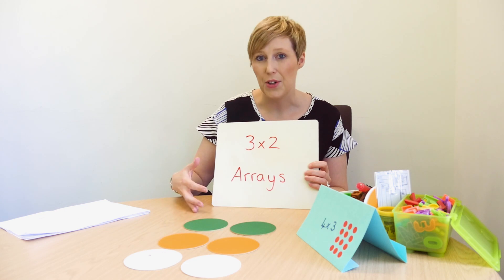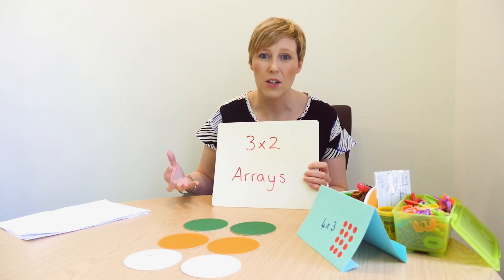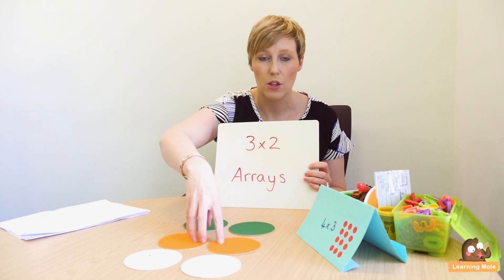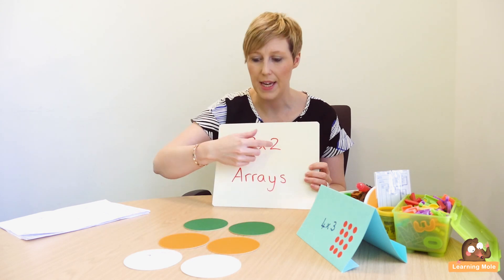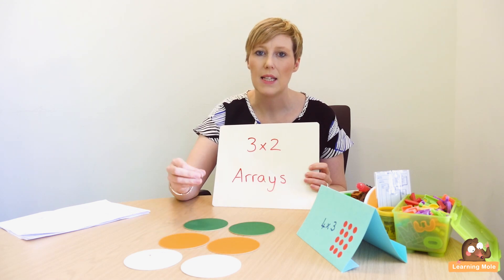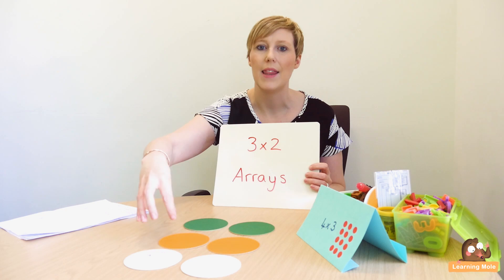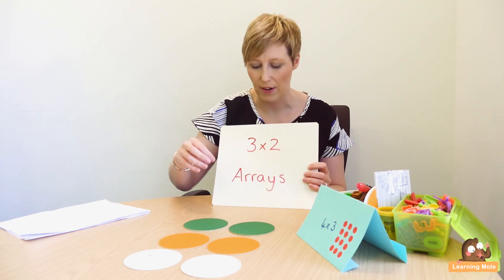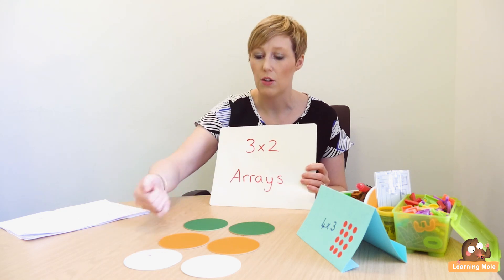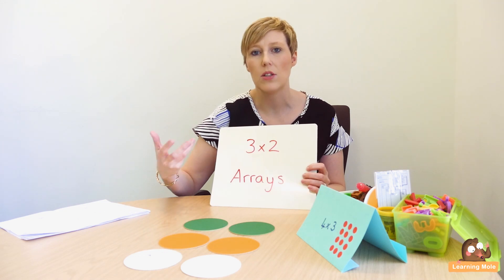We use circles, but you can use any shape really. So we've got one group of two, two groups of two, three groups of two — three times two. The idea of an array, and the reason why we use little spots, is because it sets out really clearly and you can see that little group very clearly. So we would say: you've got three lots of two, you've got three groups of two — and again, all that nice vocabulary starting to come out.